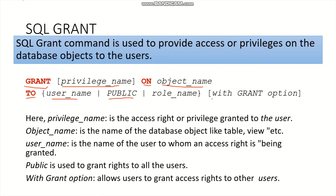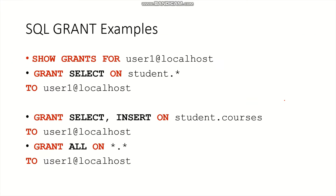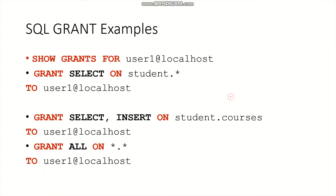We also have the GRANT OPTION, which allows users to grant access rights to other users. If I want a user to be allowed to use the grant command, I can apply it with the help of this grant option. Now we have some examples about grant. The first one is to see the list of all assigned privileges to a particular user — or we can say, to show all the grants for a particular user.